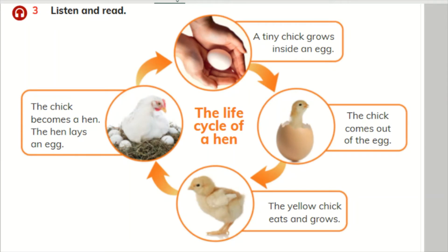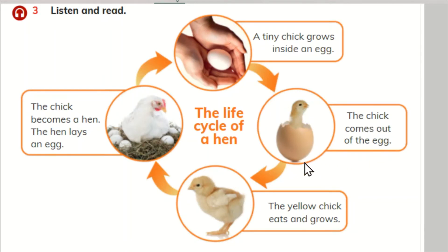Track 59: The life cycle of a hen. A tiny chick grows inside an egg. The chick comes out of the egg. The yellow chick eats and grows. The chick becomes a hen. The hen lays an egg.